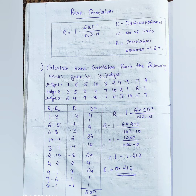Here is the rank correlation equation: R equals 1 minus 6 sigma d squared divided by n cubed minus n. Here, d includes the difference of ranks between two variables, and n is the number of pairs. The correlation value of R lies between minus 1 and plus 1.